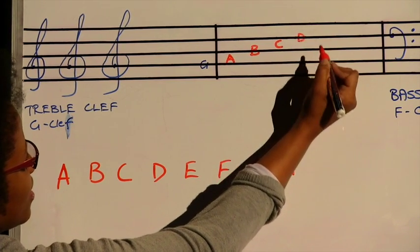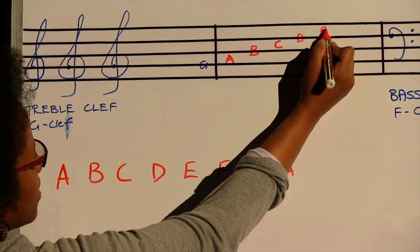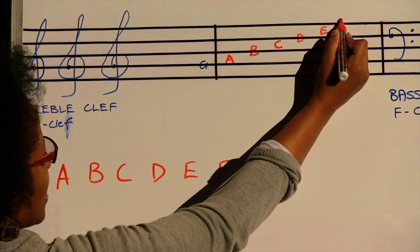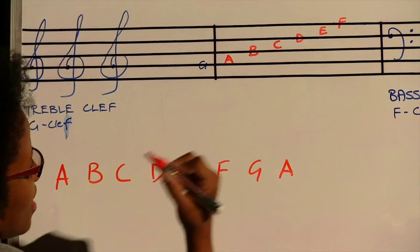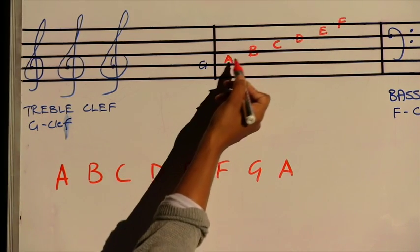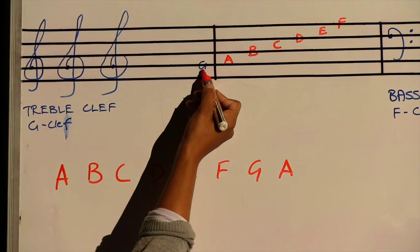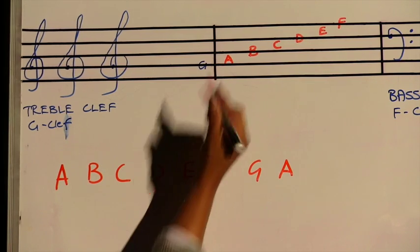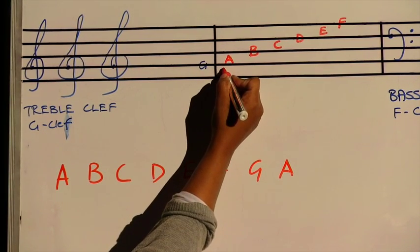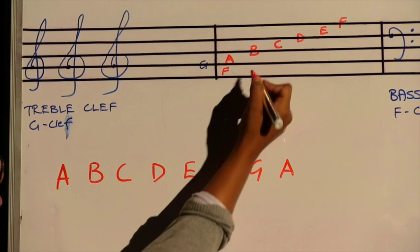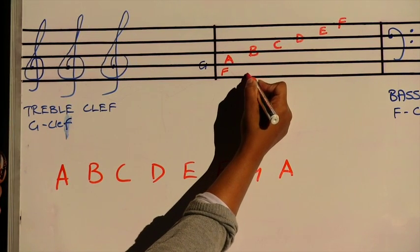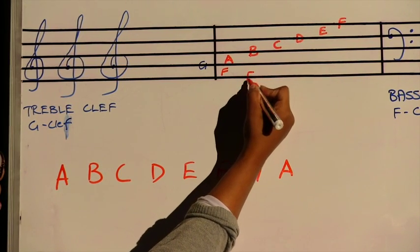Then going backwards from that G, that space will be F, then the line will be E.